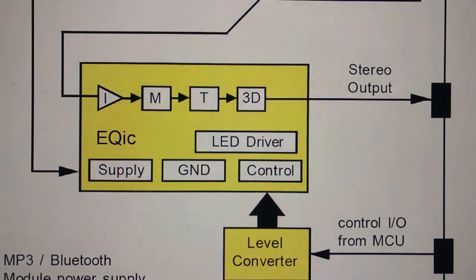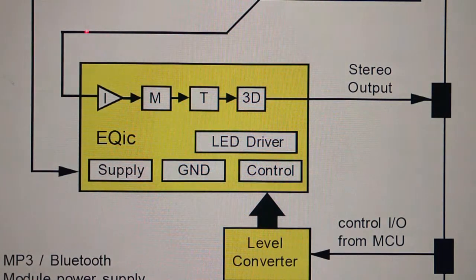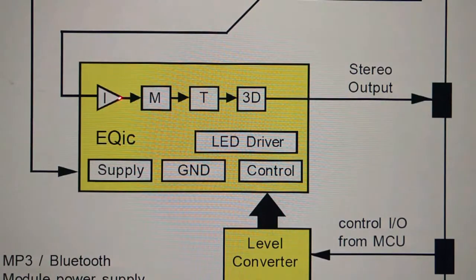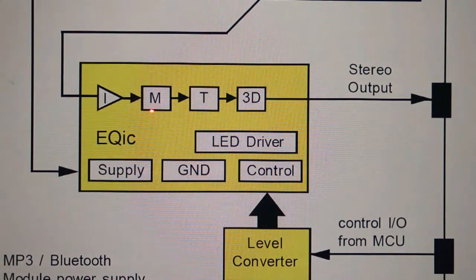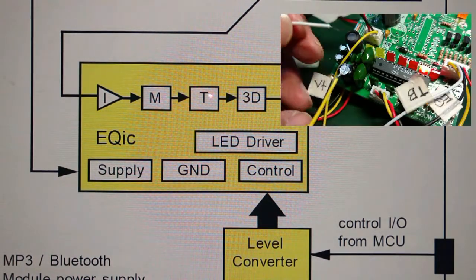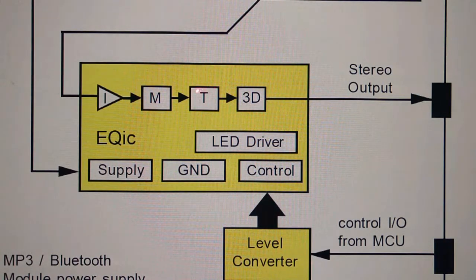The next block after the DGTC solution is the EQIC solution. The output of the DGTC — the left and right audio signal — is fed into the input stage. We can see there is a buffer, and the buffer output is fed into the mood block. The mood block is responsible for generating different music environments such as classic, pop, jazz, and also flat or normal.